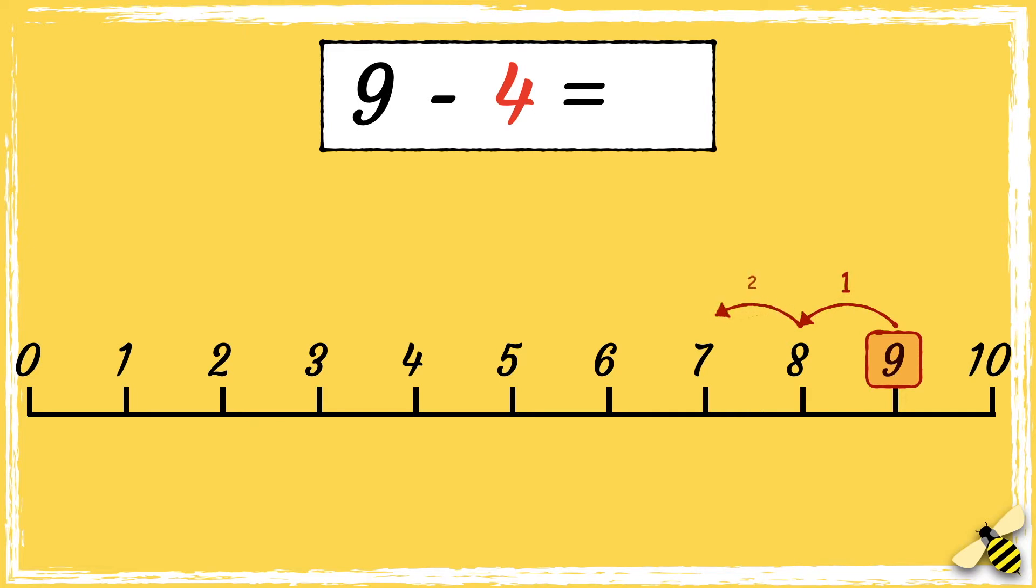One, two, three, four. We've landed on 5, so 9 take away 4 equals 5.